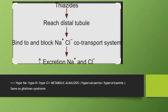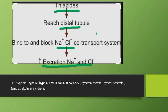Now let us look at thiazide. Thiazide acts on the distal convoluted tubule and blocks the sodium-chloride co-transporter, leading to excretion of sodium chloride along with water, causing diuresis. The blood picture will be hyponatremia, hypochloraemia, and metabolic alkalosis. Prolonged use of thiazide also causes a syndrome known as Gitelman syndrome.